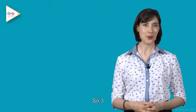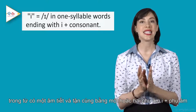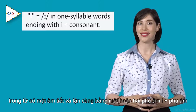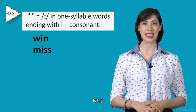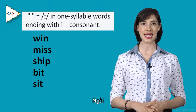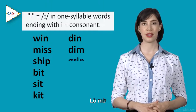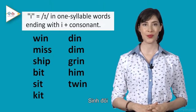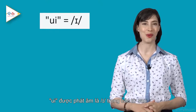Number three: the letter I is pronounced as a short I when it appears in words which have one syllable and ends before a consonant. For example: win, miss, ship, bit, sit, kit, din, dim, grim, hymn, twin. UI is pronounced as a short I in some of the following words.